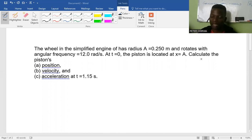So in this video, we are looking at physics under simple harmonic motion or waves and vibration. The question talks about the wheel in a simplified engine has a radius A equal to 0.25 meter and rotates with angular frequency of 12.0 rad per second. At time equal to zero, the piston is located at x equal to A. Calculate the piston's position, velocity, and acceleration at t equal to 1.15 seconds.